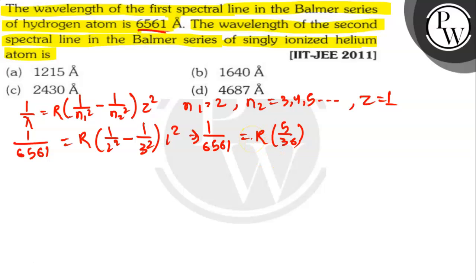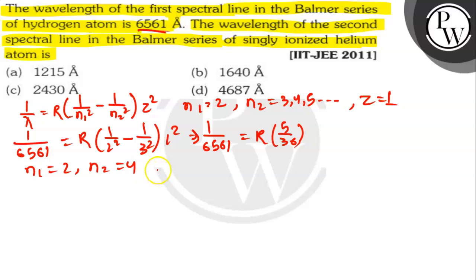Now, given in the question for the second line of the Balmer series, for the helium atom: n1 is equal to 2 for Balmer series, n2 is 4 for the second line, and z is 2, which is the atomic number of the helium atom.